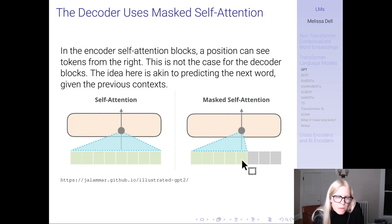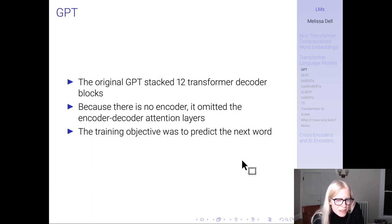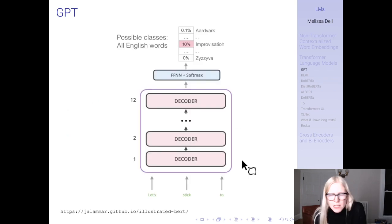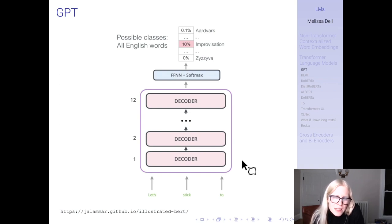This is a visual representation of the masked self-attention from the decoder side of the model. The original GPT stacked 12 transformer decoder blocks. Since there's no encoder, it omitted the encoder-decoder attention layers. The training objective was just to predict the next word. GPT had its 12 decoder stacks — each decoder block is like the decoder from the original transformer, except it omits the encoder-decoder attention since there is no encoder. Then training it, you're using a softmax over all words in the vocabulary to predict which word comes next.